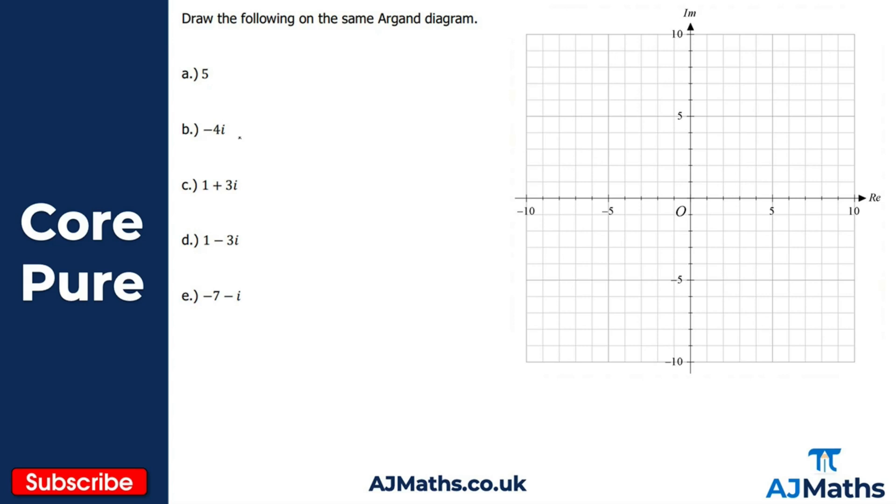If we start with part a, we just want to plot the number 5. This only has a real part to it, there is no imaginary part. We go five units along here: one, two, three, four, five. That would be our point there. I'll label this as z1, then z2, z3, z4, and z5. What I've plotted there now is z1.